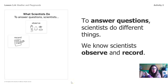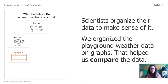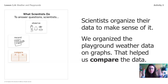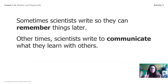Okay, do you remember this chart? We talked about what scientists do. To answer questions, scientists do different things. We already know that scientists observe with their five senses and record data from investigations. We also learned that scientists organize their data to make sense of it. Remember how we used those graphs to organize our data so we could really see it very easily? That helped us compare the data. Comparing is something else that scientists do — it means to look and see what is the same and what is different about data. Sometimes scientists also write to remember things from their investigations. Other times scientists write to communicate what they've learned with other people. We're going to do some writing together right now.